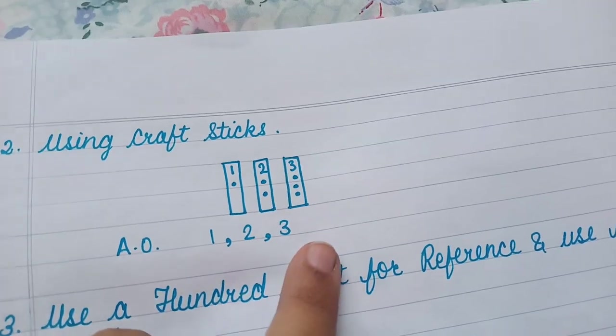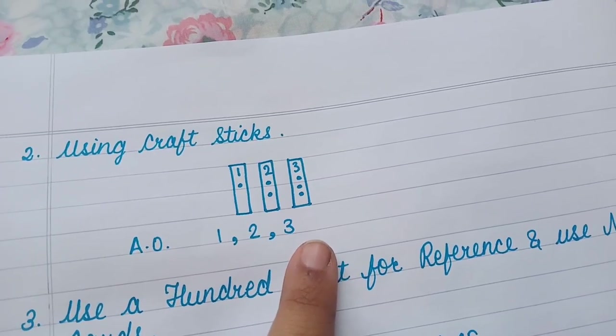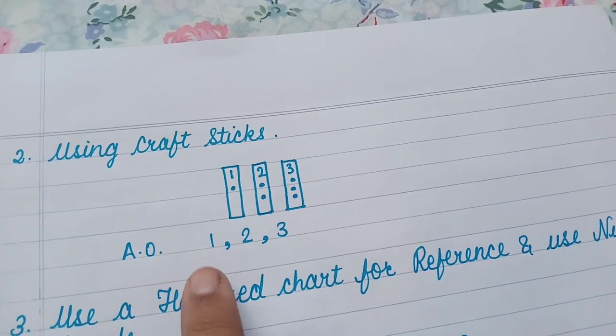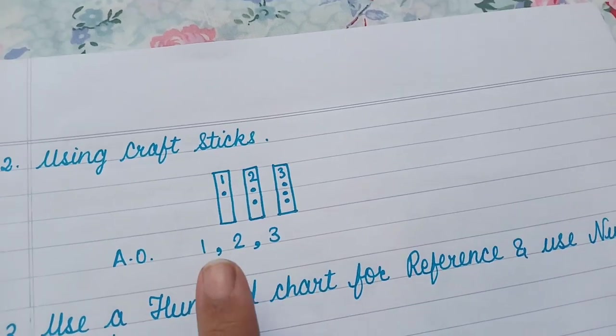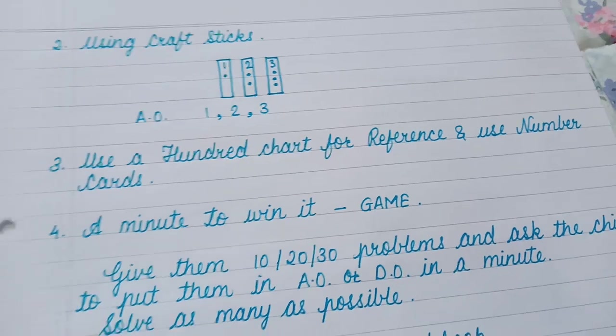So 1 to 3 is the correct ascending order. And what will be the correct descending order? From biggest to smallest. So 3 to 1.